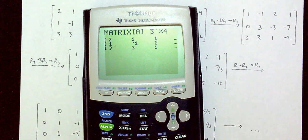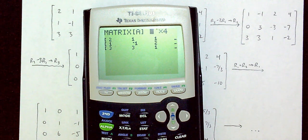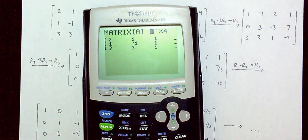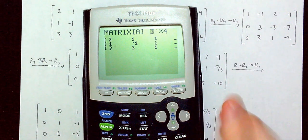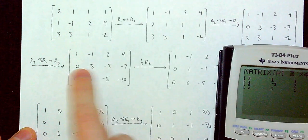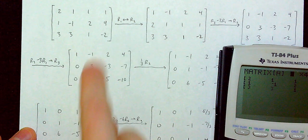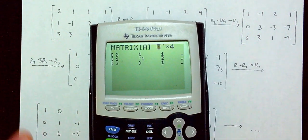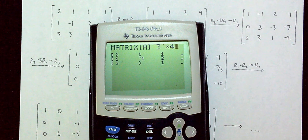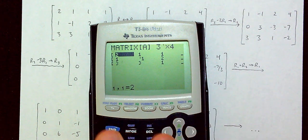First, enter the number of rows and then the number of columns of your augmented matrix — always rows first, then columns. For a system of three equations in three variables, that's 3 rows and 4 columns. Enter each value and hit Enter; the calculator will resize to show that many rows and columns.